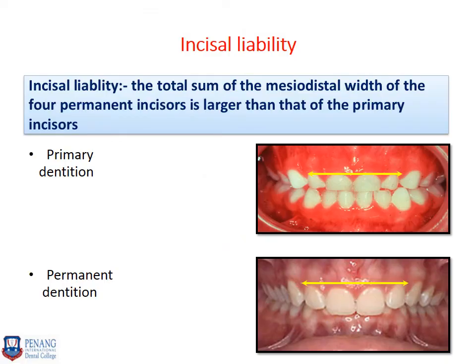Incisal liability refers to the total sum of the mesiodistal width of the four permanent incisors compared to the four primary incisors. The total sum of the mesiodistal width of the four permanent incisors is larger than that of the primary incisors. The difference between these measurements is called the incisal liability. As seen in the picture, the primary incisors are smaller than the permanent incisors.